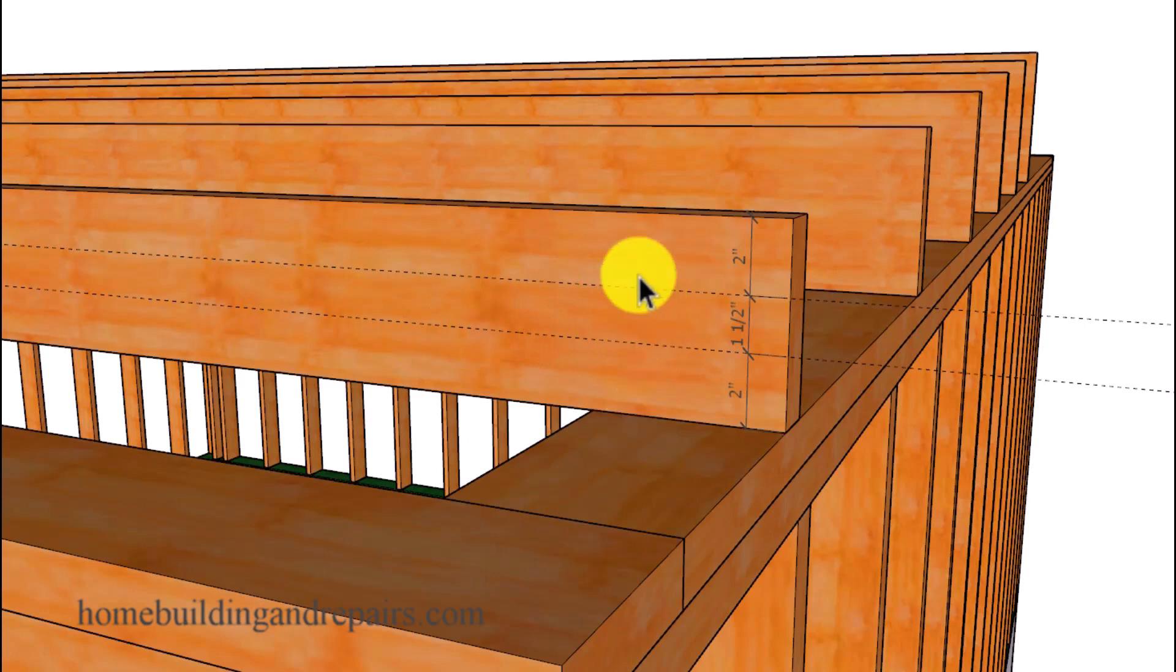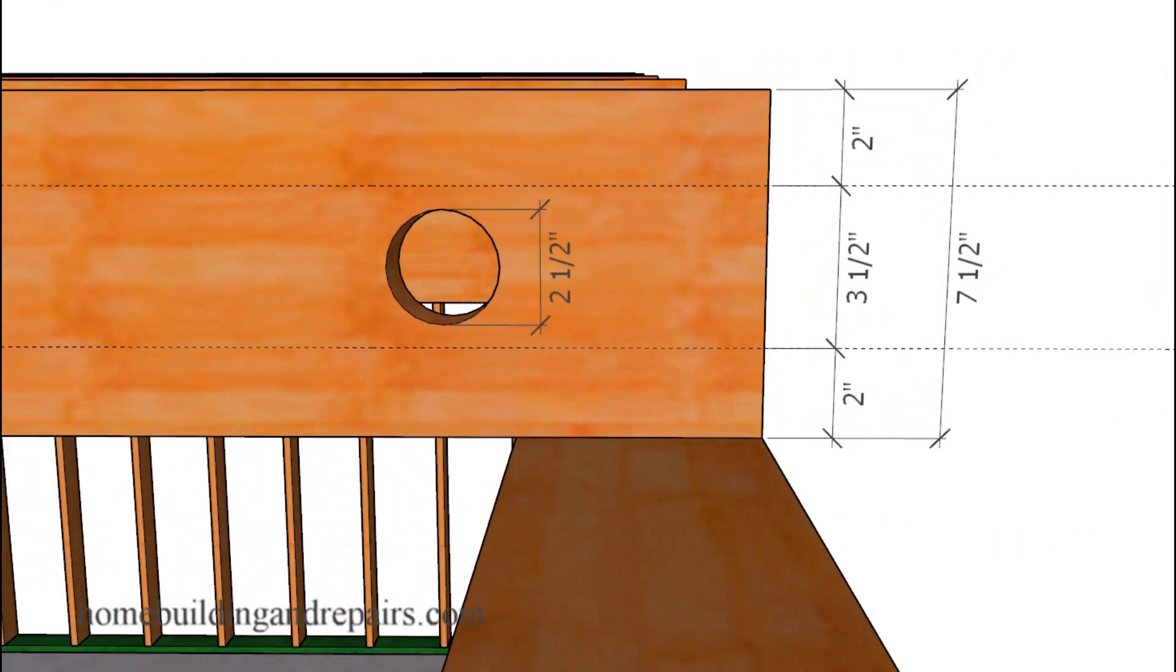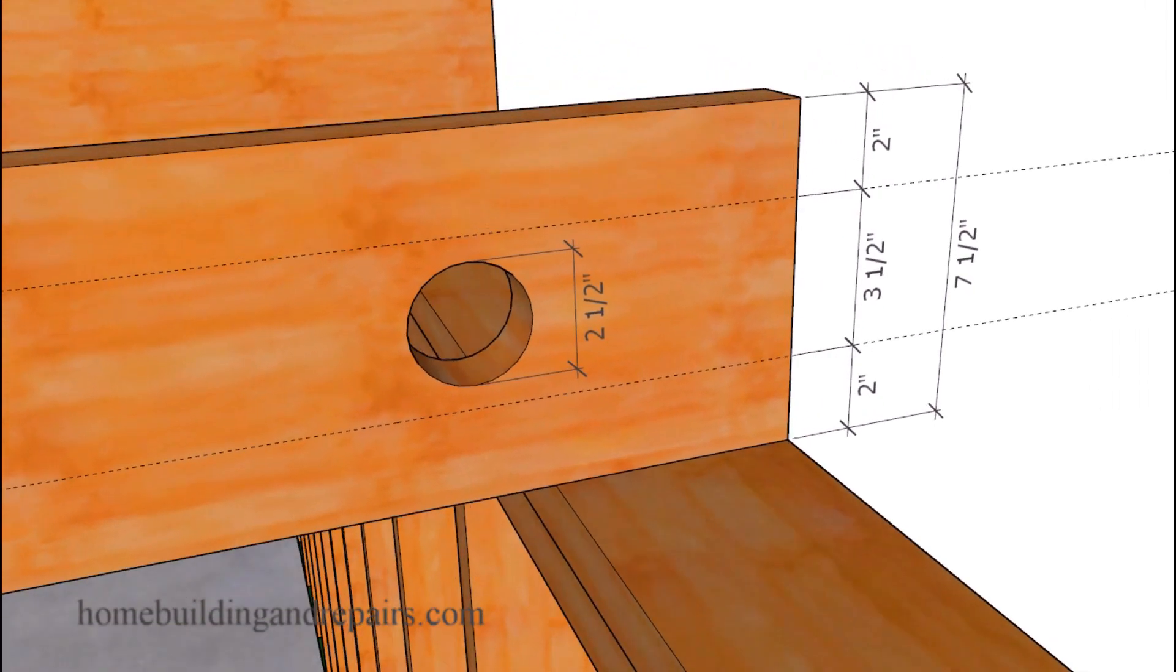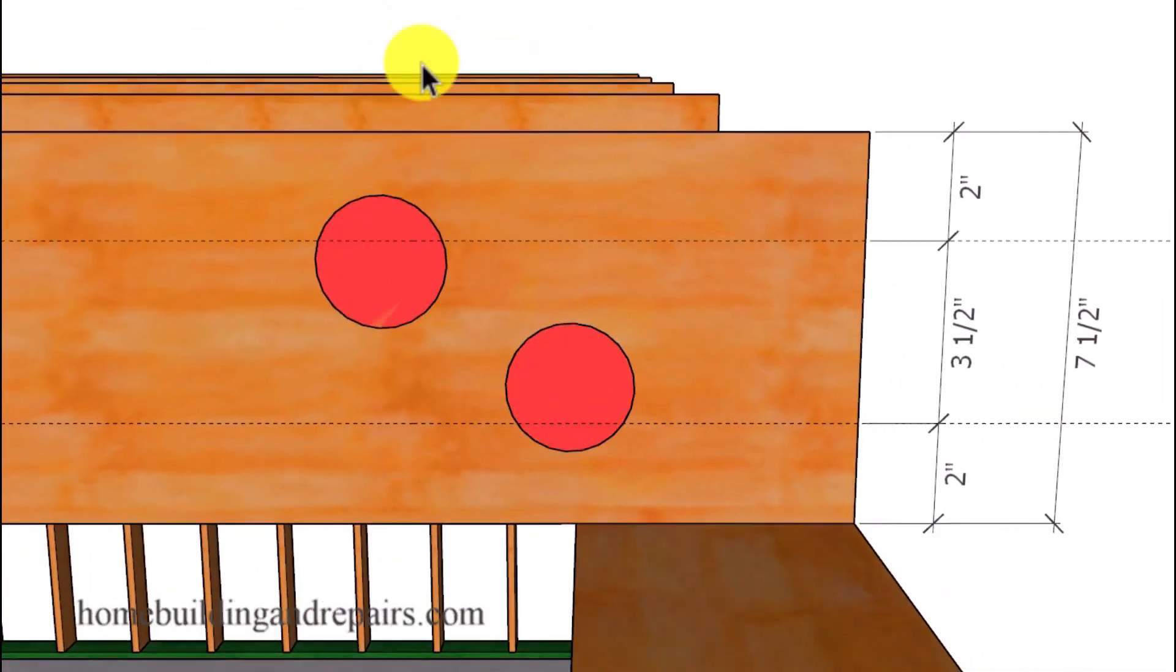So the 1/3 rule on the height of the joist gets kicked out of the window. However, that will not be the case on a 2x8 that is 7.5 inches tall, providing us with a maximum diameter of the hole for 2.5 inches. And again, this hole cannot be located anywhere within the 2-inch section located at the top or bottom of the floor joist.